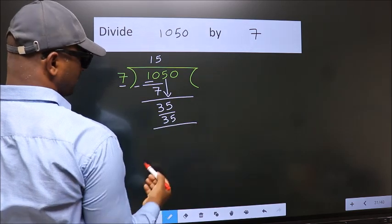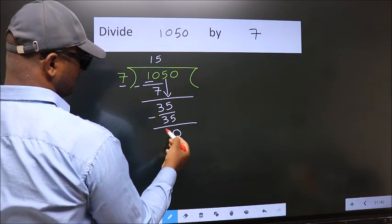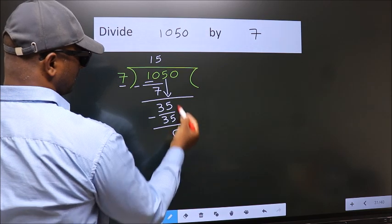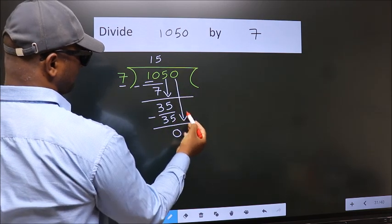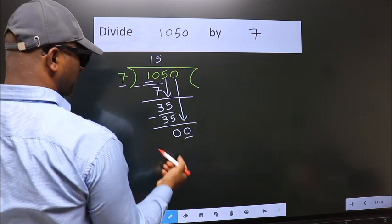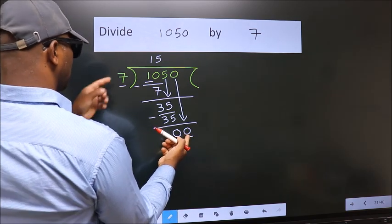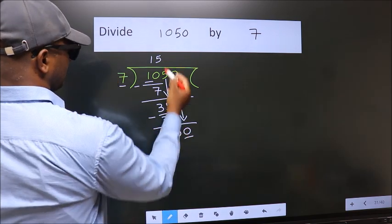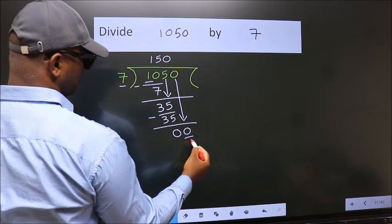Now we subtract. We get 0. After this, bring down the beside number. So 0 down. So 0. When do we get 0? In 7 table. 7 times 0. 0.